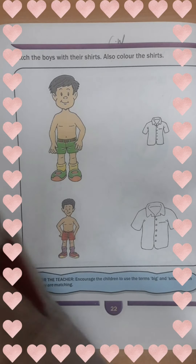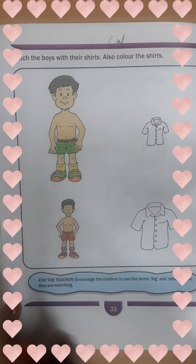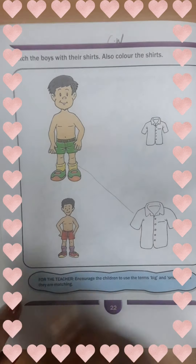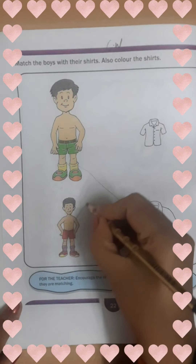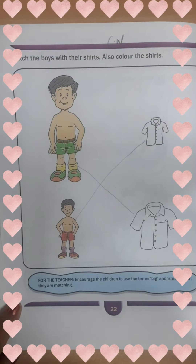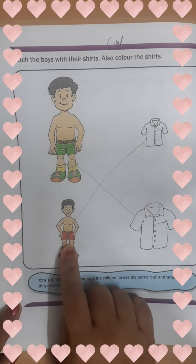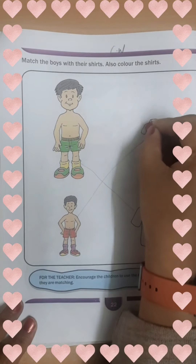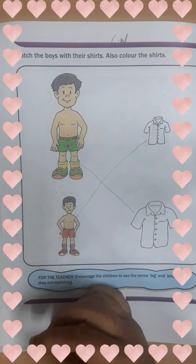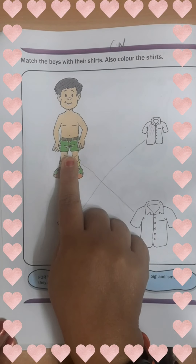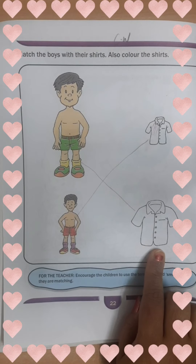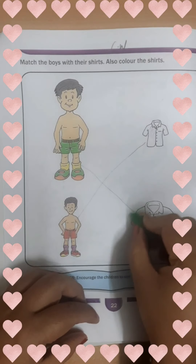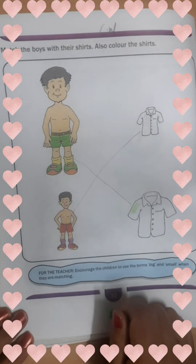So we are going to match them. This is a big boy, so we match him with the big shirt like this. This is a small boy, so we match him with the small shirt like this. Now we color — the big boy is wearing red shorts, so we color his shirt red. The small boy is wearing green shorts, so we color his shirt green. You have to color it properly.